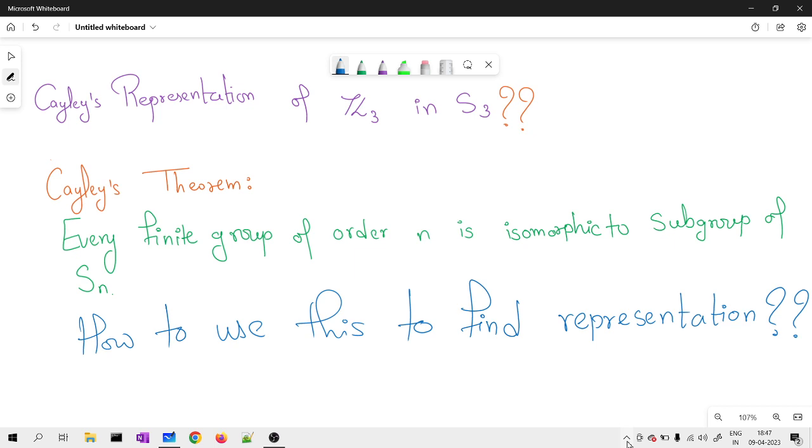Now, Cayley's representation - whenever I see this word, the first thing that strikes you is nothing but Cayley's theorem. What does Cayley's theorem tell you? It tells you that every finite group of order n is isomorphic to a subgroup of Sn.